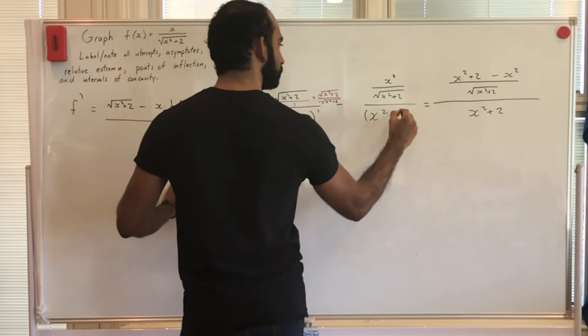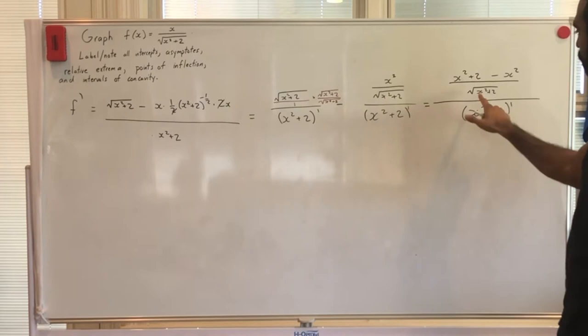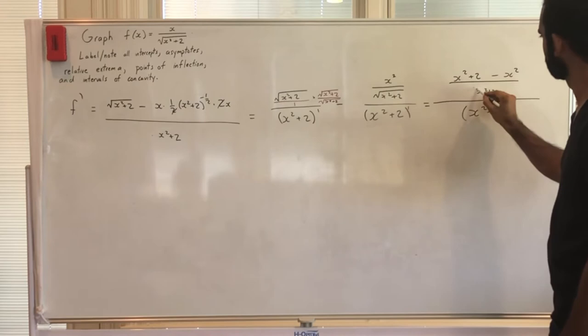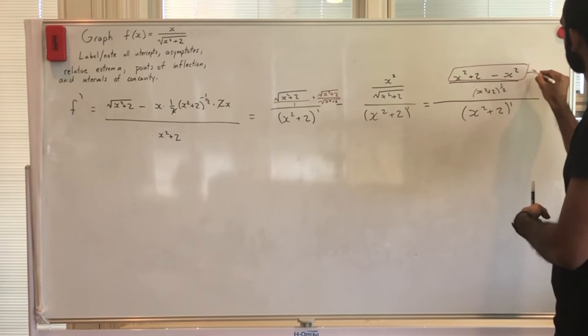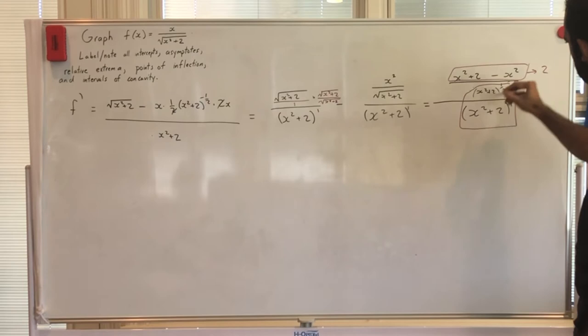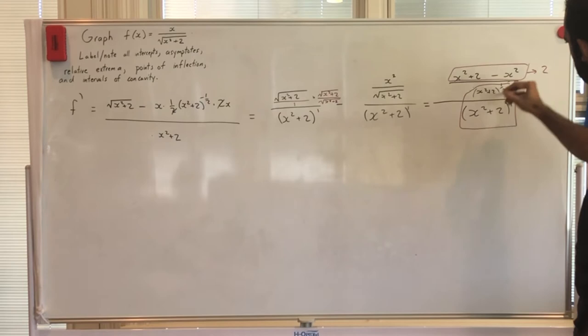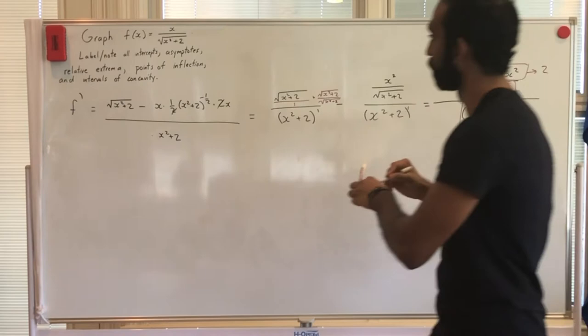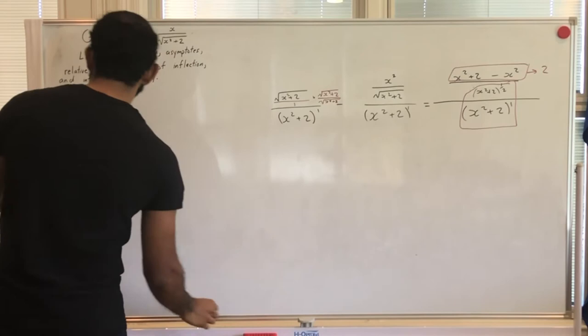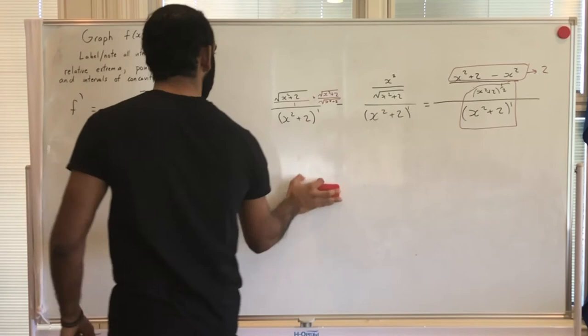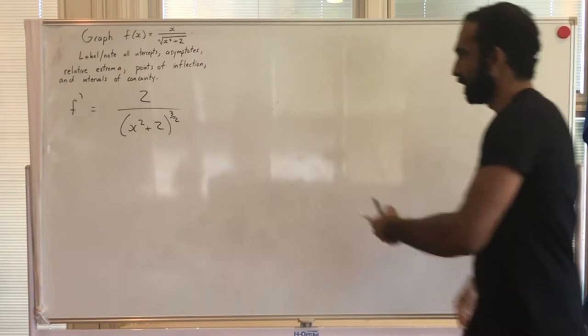I'll rewrite √(x² + 2) as (x² + 2)^(1/2), so the denominator becomes (x² + 2)^(3/2). The entire first derivative simplifies to 2 over (x² + 2)^(3/2).